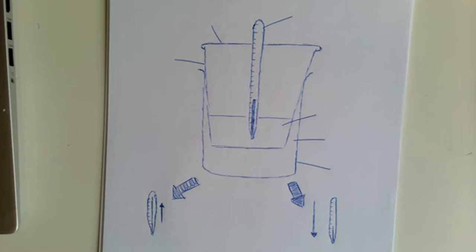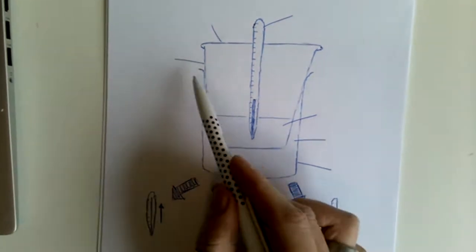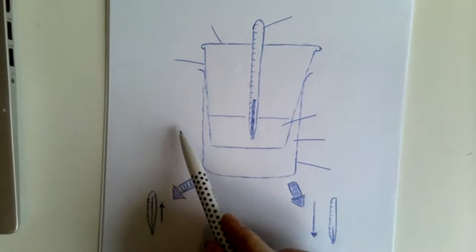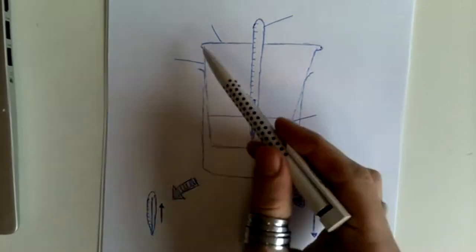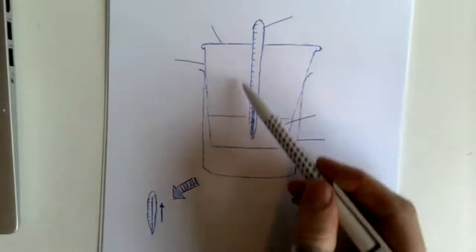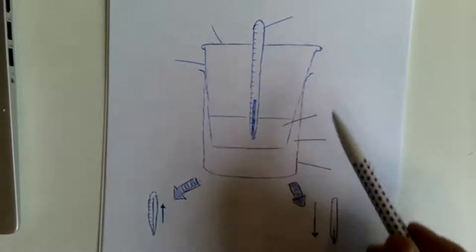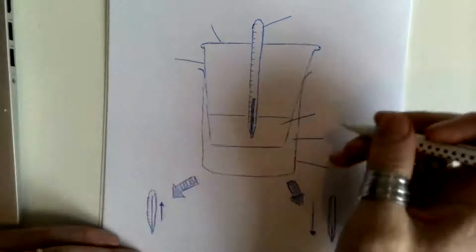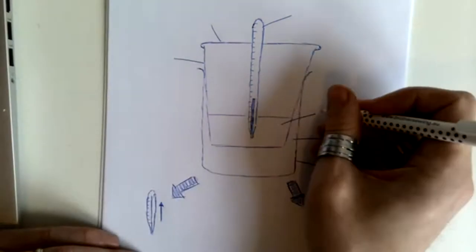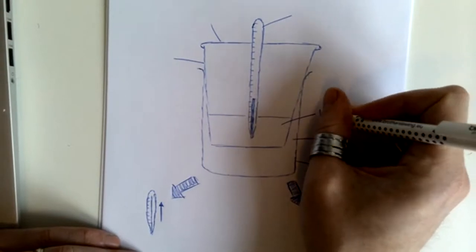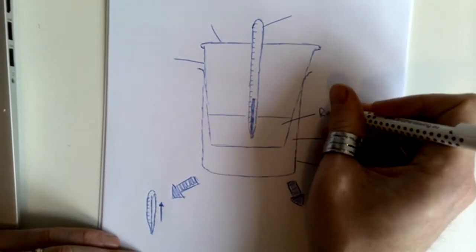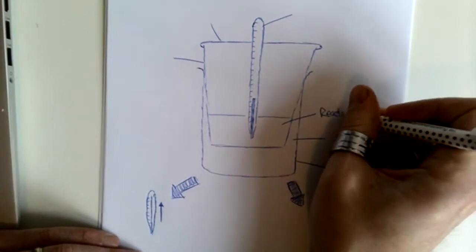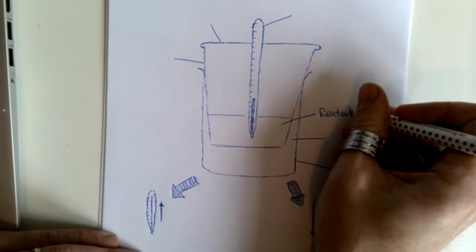Having done it before, you remember that you have this setup of a polystyrene cup, a thermometer, a lid, and placed in a beaker. What happens is that reactants are added into this polystyrene cup.